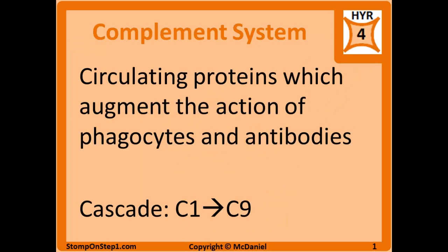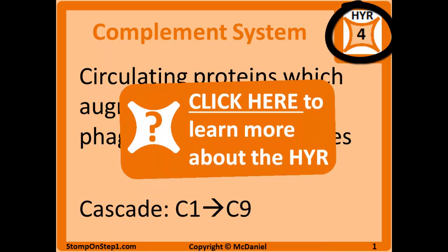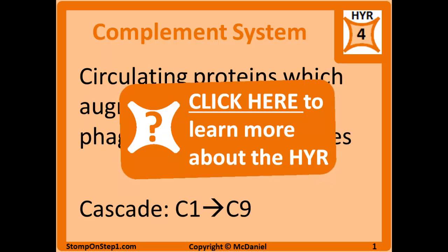We will start with the complement system, which you'll see in the top right corner. I give it a high yield rating of 4. The high yield rating is a scale from 0 to 10 giving you a rough estimate for how important each topic is for the USMLE Step 1 exam. If you'd like to learn more about how the rating is calculated, you can click the orange box here.